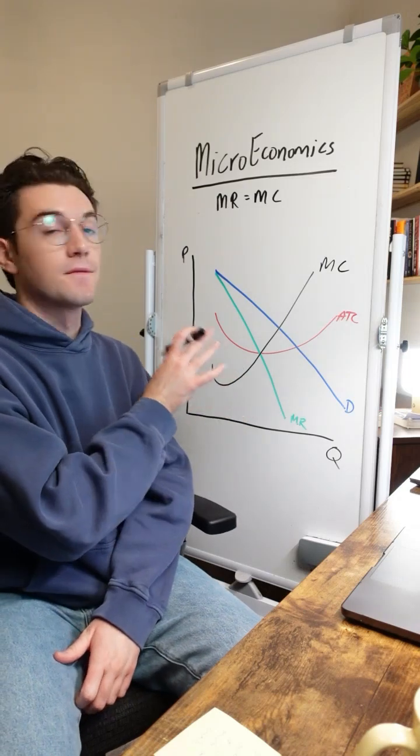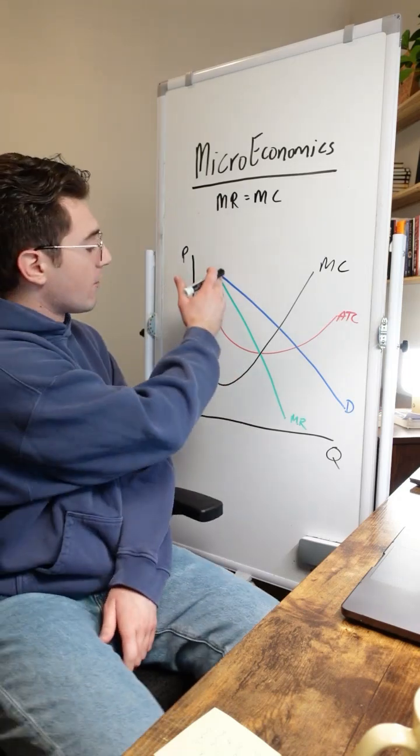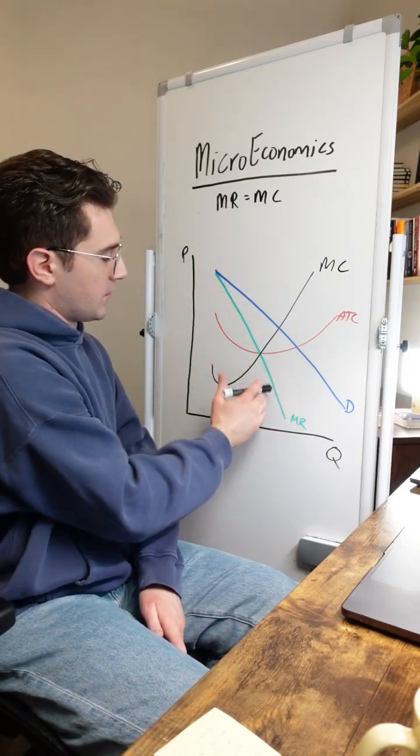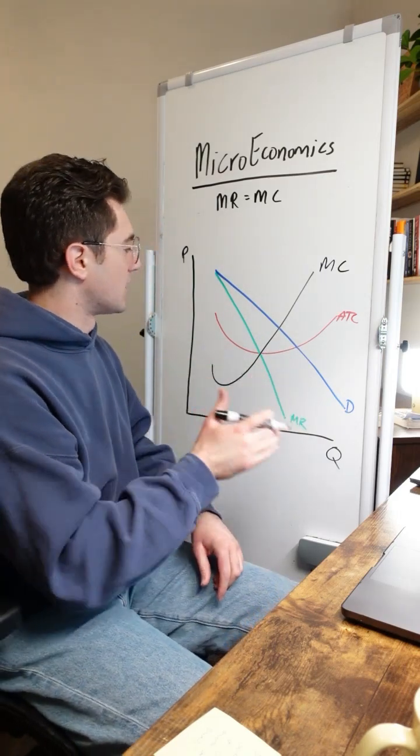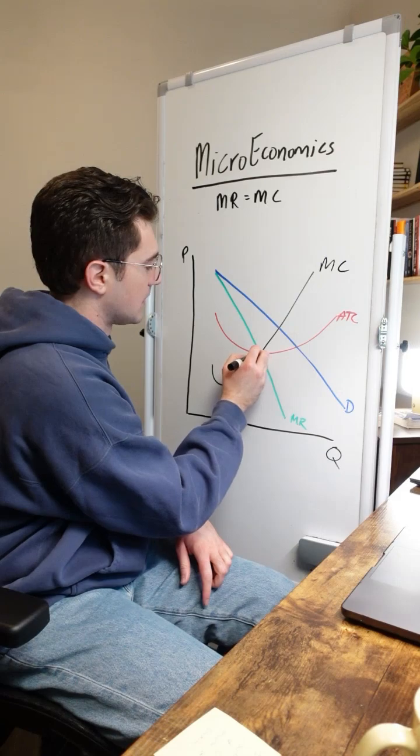All right. Now this is how a monopolistic firm's cost curves would look. Now the marginal revenue curve is downward sloping. It's double the steepness as the demand curve. And to start here, let's find where MR equals MC. MR, MC, that point happens right here.